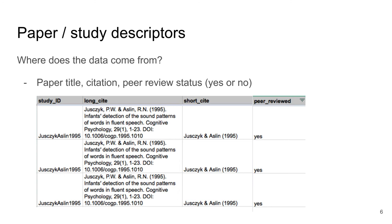Of course you need information about the source document. We record a full citation and a short title. We also code whether or not the paper or conference proceedings paper was peer-reviewed in a simple yes-no way.